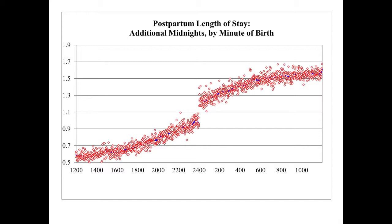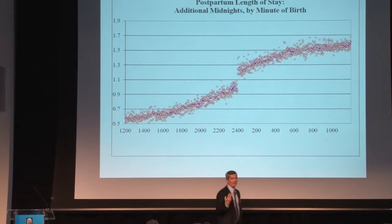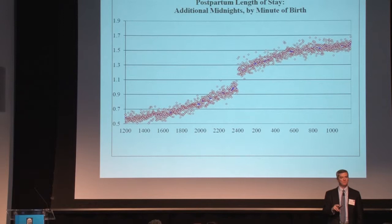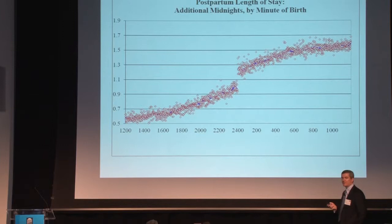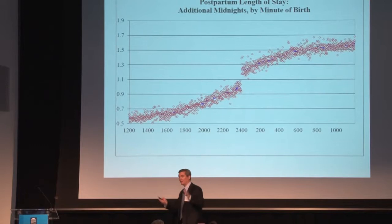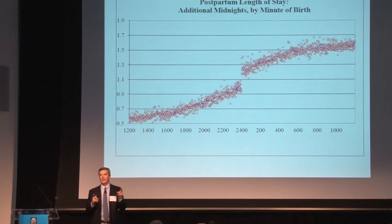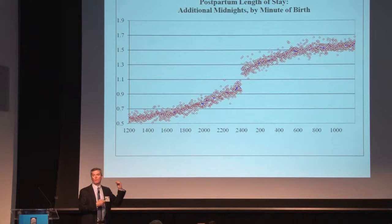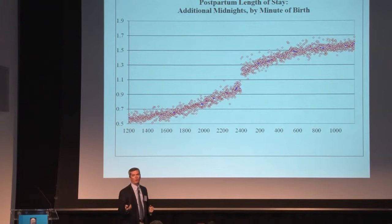Here's data from California. On the horizontal axis is time of birth from noon — here's noon, and here's midnight — and the vertical axis is the number of additional midnights people stay in care. The number of days covered equals the number of midnights you're in the hospital. As you get to just before midnight to just after midnight, you see a discontinuity — a jump in additional midnights. A newborn born at 11:59 stays at least one day; one born at 12:01 is a whole 24 hours before you've been there one day as measured in accounting data.